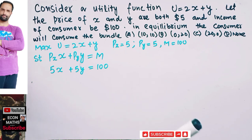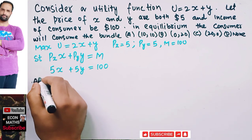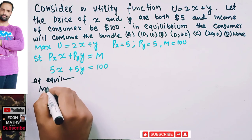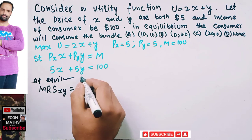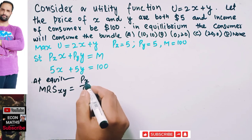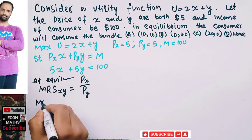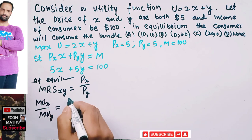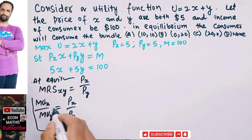At equilibrium, the condition that must be satisfied is that the marginal rate of substitution (MRS) between goods x and y equals the ratio of their prices. That is: MRS = MUx / MUy = Px / Py. This is the standard equilibrium condition.